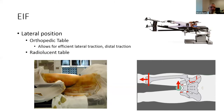Alternatively, you can use a regular radiolucent orthopedic table and utilize a femoral distractor across the joint as your traction device, though it doesn't provide as efficient lateral traction. You typically still need a Schanz pin in the femur to help pull the femoral head out.